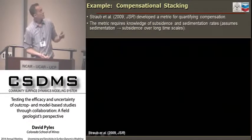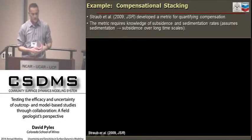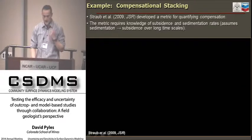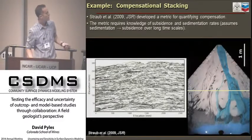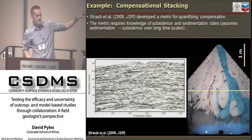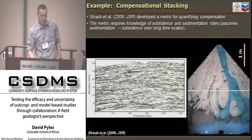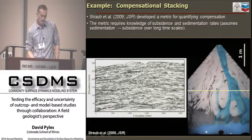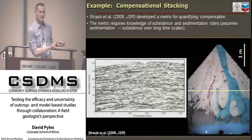But how do we quantify it? This is where my co-author Kyle comes in. Kyle in 2009 developed a metric for quantifying compensational stacking. Kyle's a physical modeler. Shown here is a snapshot of his delta basin experiment, where you can see the active channel at the time of the photograph on the right side of the basin, while the left part was abandoned. During this experiment, they were rising base level—in other words, subsiding the basin—and this cross-section shows what the resultant stratigraphy looks like.